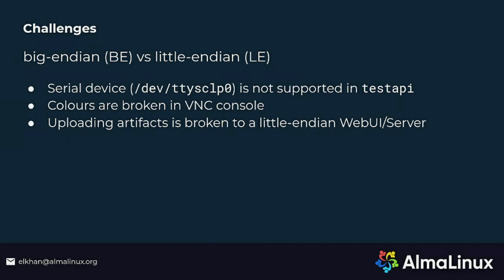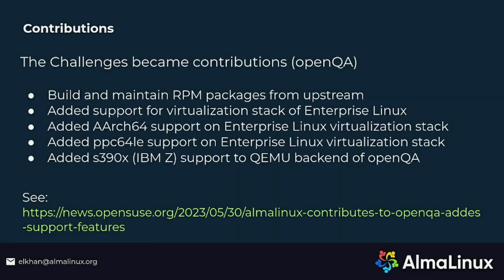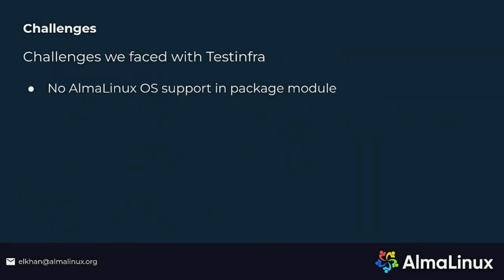A more general challenge was no s390x support on the QEMU backend of OpenQA. Other challenges came from differences in endianness — as you know, s390x is big-endian. We had three challenges there: first, lack of support for the serial device in the test API, which means we couldn't run any serial-based tests; second, colors were broken, blocking all visual tests; and third, uploading artifacts to the web server was broken, probably due to little-endian vs. big-endian issues. On the TestInfra side, we had a single challenge: lack of support in the package model.